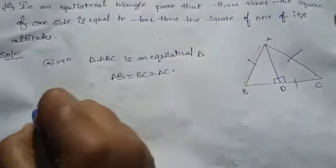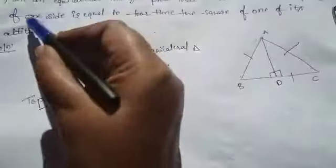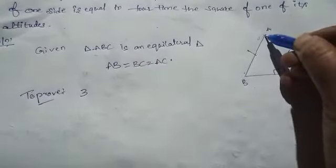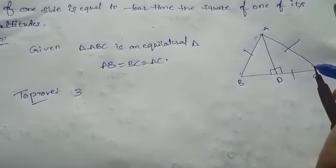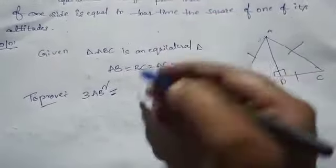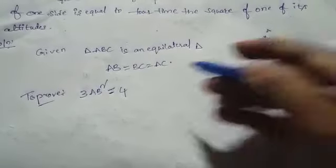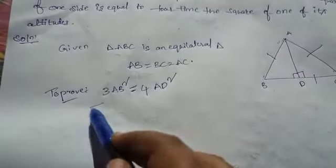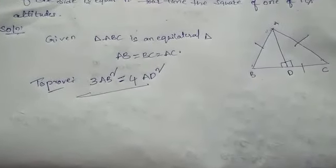We need to prove 3 times the square of one side. That is, 3 into AB square equal to 4 times the square of its altitude. AD is one of its altitudes, so we need to prove 3 AB square equal to 4 into AD square.